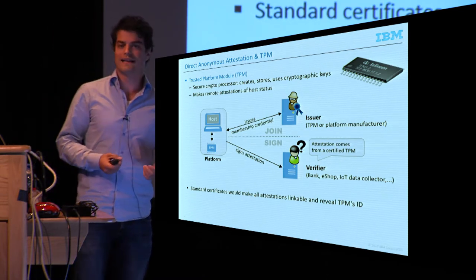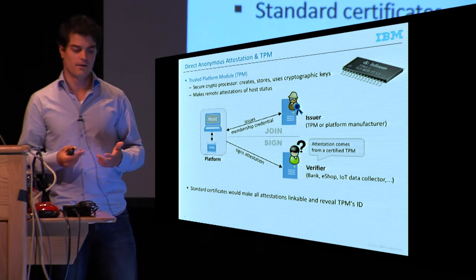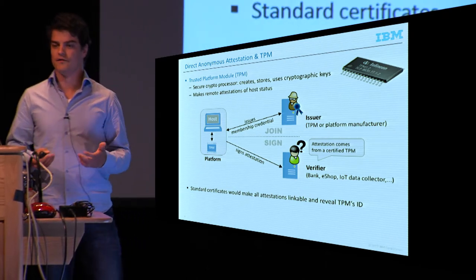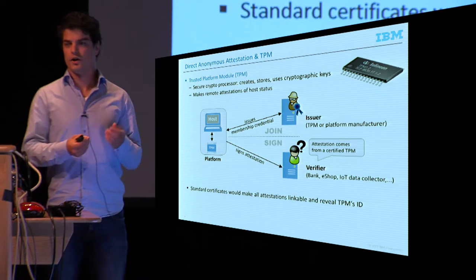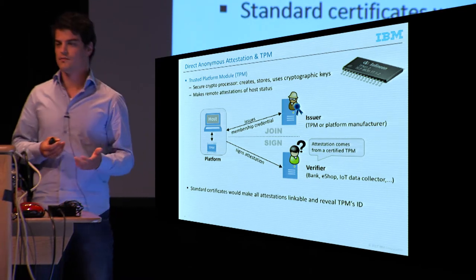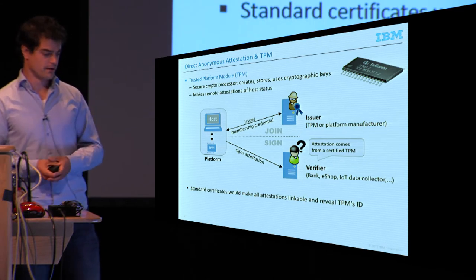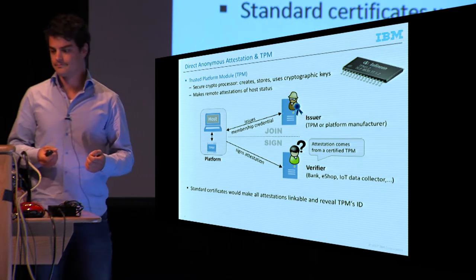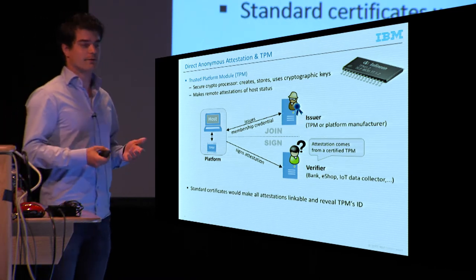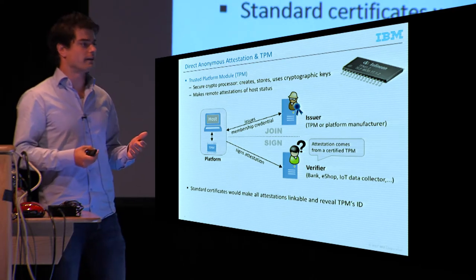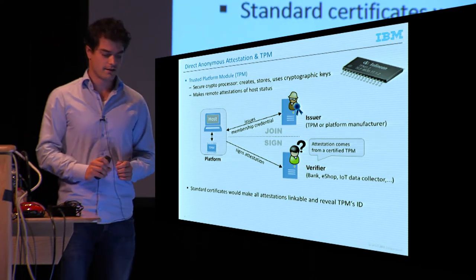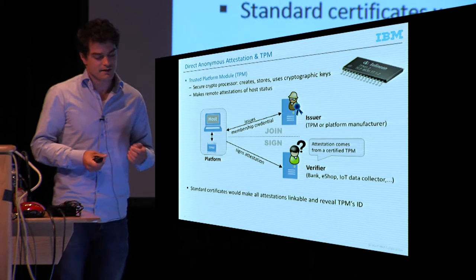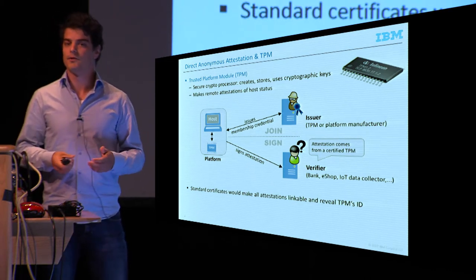This process is called remote attestation, and typically it's a two-phase process. First we need a registration step — the join phase — in which the platform, so the host and the TPM together, talk to some issuer, an authority in the system, to obtain a membership credential. After that, the platform can sign attestations, giving a verifier a cryptographic proof that some TPM measurement is correct. So in our trusted boot example, the TPM can convince a remote verifier that the laptop started the correct software.